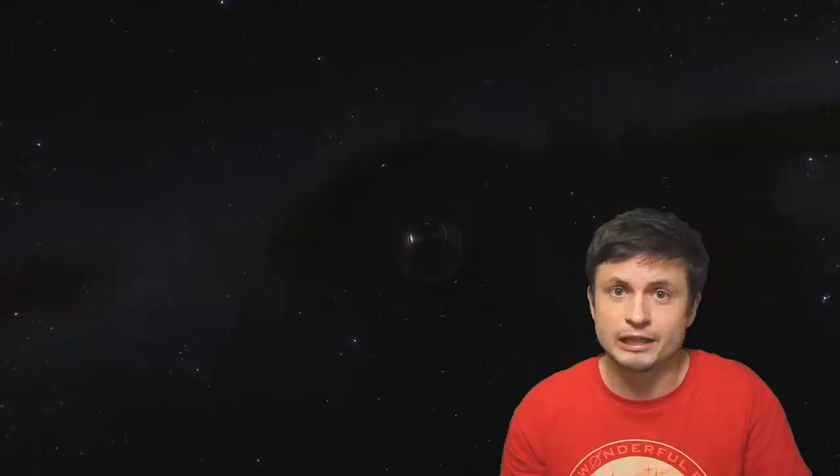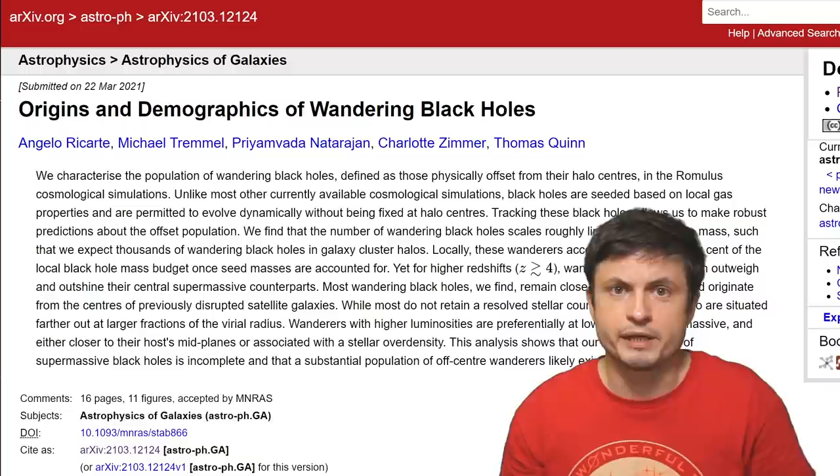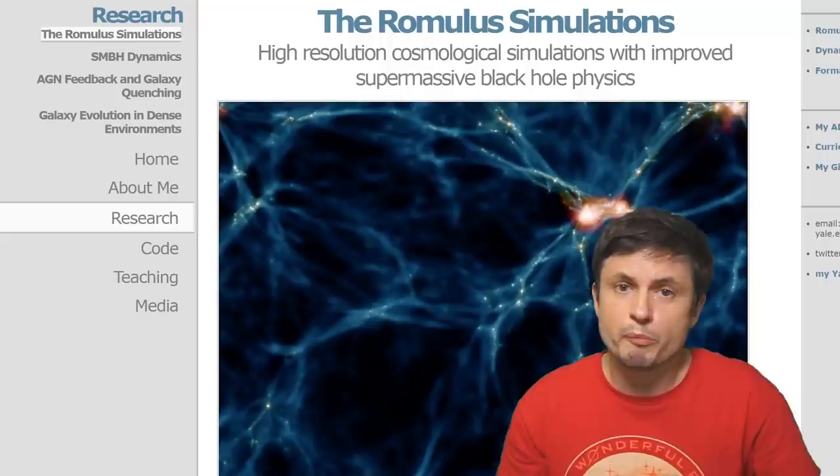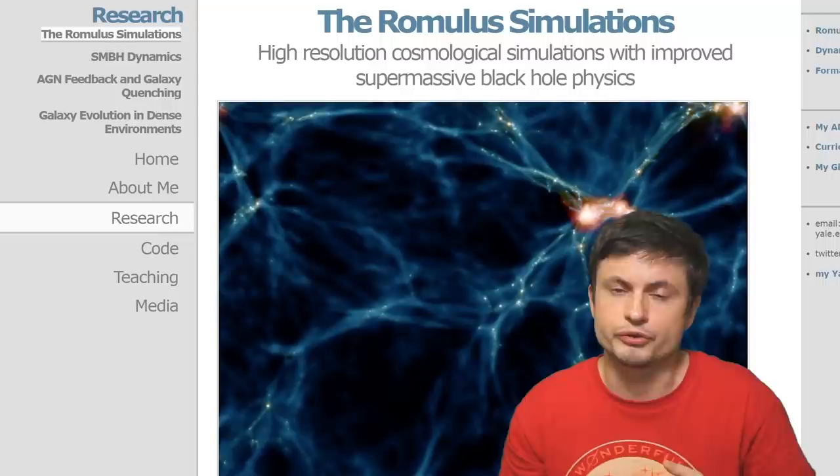Hello wonderful person, this is Anton and today we're going to be talking about the wandering black holes. Based on the study right here that you can find in the description below that used the computer simulation and more specifically the Romulus cosmological simulation to try to figure out how many potential wandering black holes there are in the Milky Way galaxy and how many we can expect around other galaxies as well.